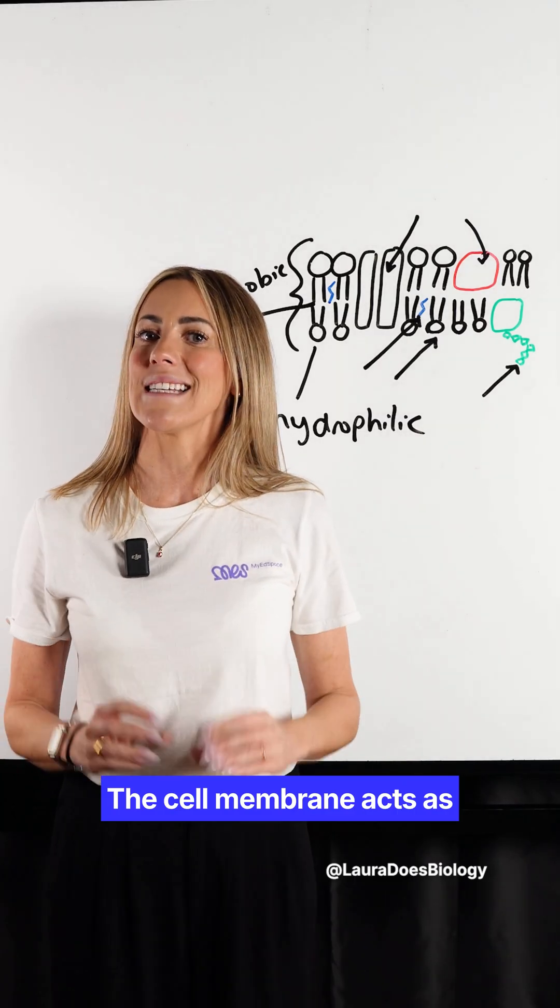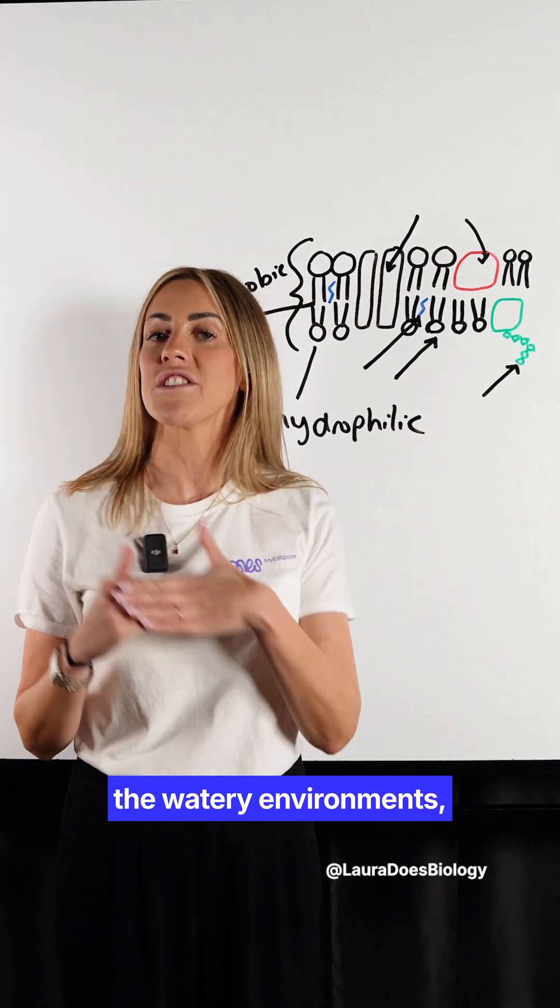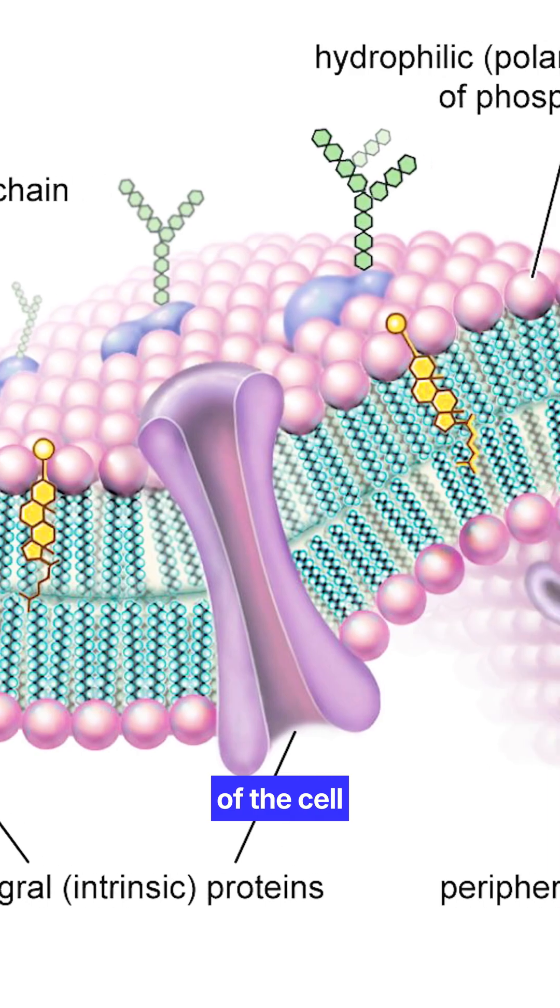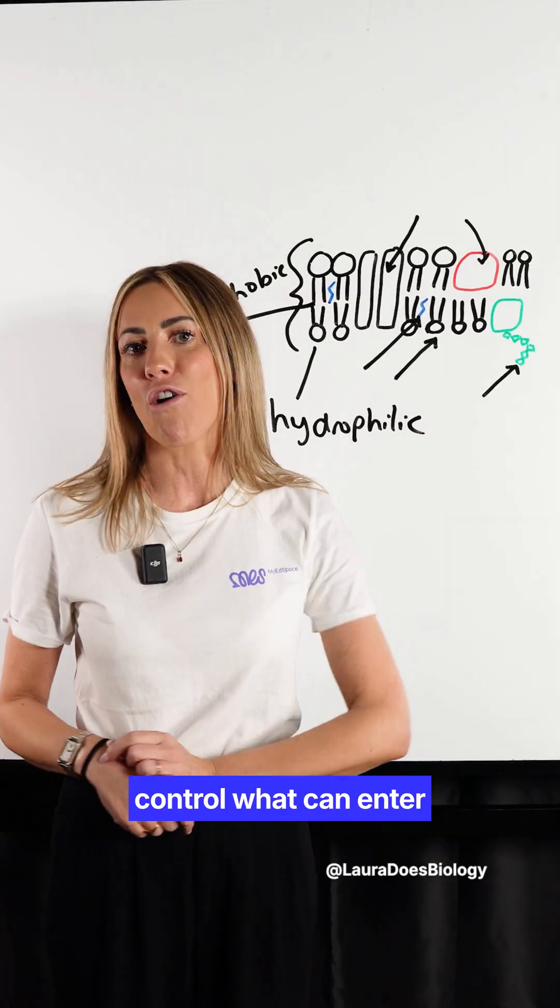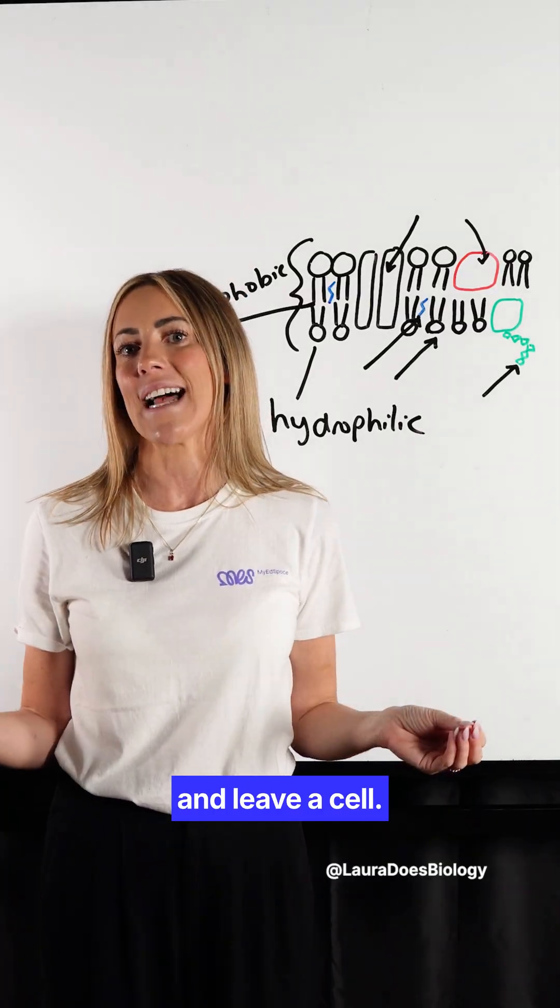The cell membrane acts as a stable barrier between the watery environments both inside and outside of the cell, and its job is to control what can enter and leave inside of the cell.